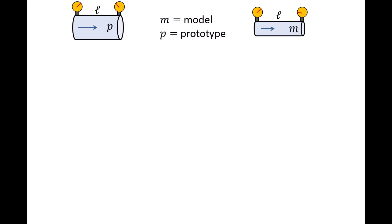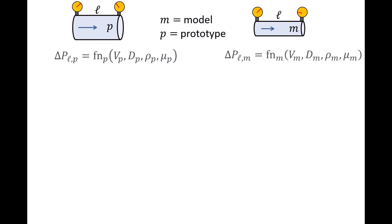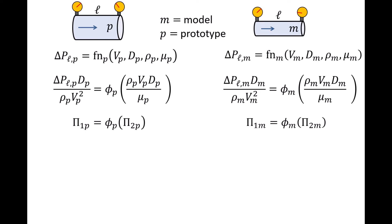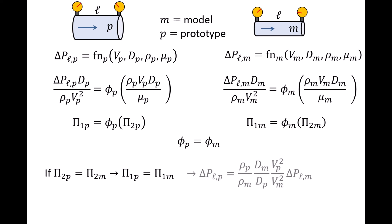We remove the labels A and B on the two systems and replace them with labels P and M, which stands for prototype and model. The dependent variable delta PL for both the prototype and model is a function of the same independent variables. Using dimensional analysis, we find that two pi groups are required, and pi 1 equals some function phi of pi 2. Since the dependent variable in both systems is a function of the same independent variables, we expect the function phi of the prototype and model to be the same. We can predict how a prototype should behave at a particular value of pi 2 by running an experiment with the model at the same value of pi 2, and then pi 1 of the prototype equals pi 1 of the model.